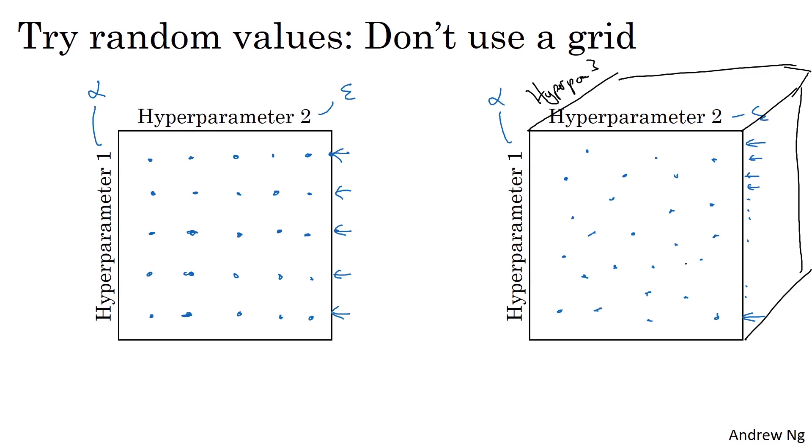And sometimes it's just hard to know in advance which ones turn out to be the really important hyperparameters for your application. And sampling at random rather than in a grid ensures that you're more richly exploring the set of possible values for the most important hyperparameters, whatever they turn out to be.